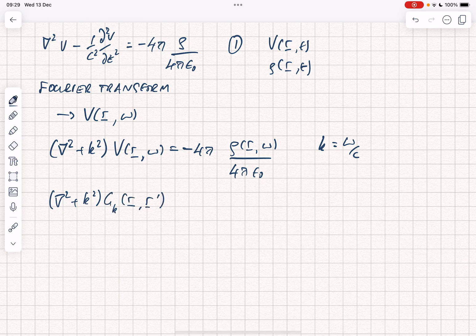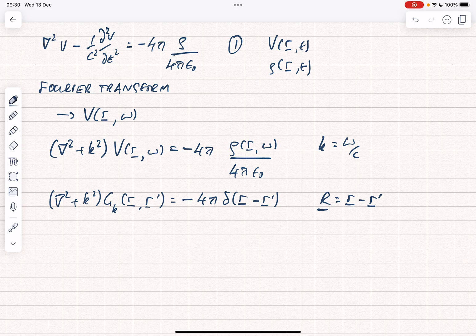This equals minus 4 pi delta of r minus r prime. And now we see why the delta comes in. We're going to define capital R equals r minus r prime, and of course r on its own is just the magnitude of the vector r.